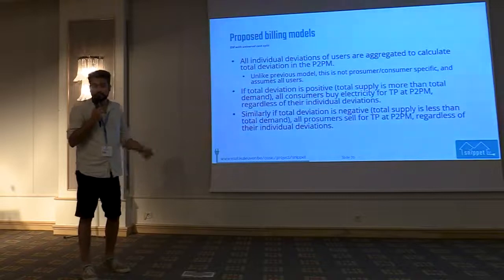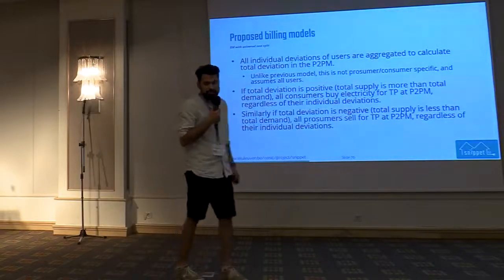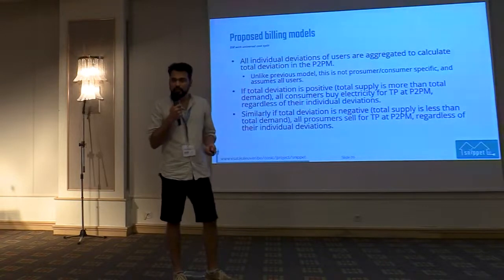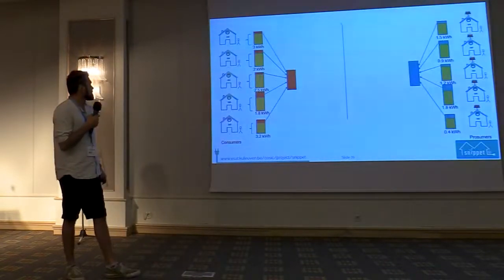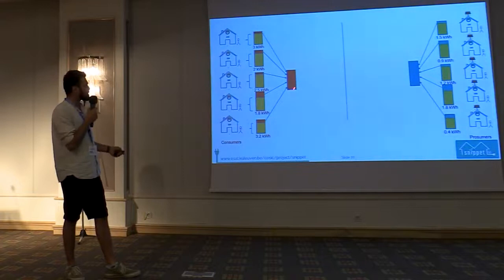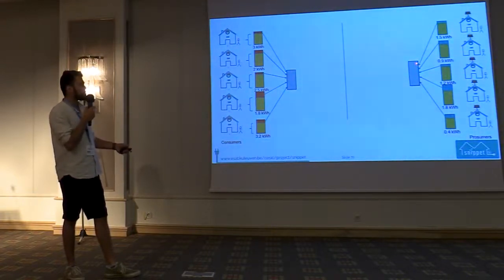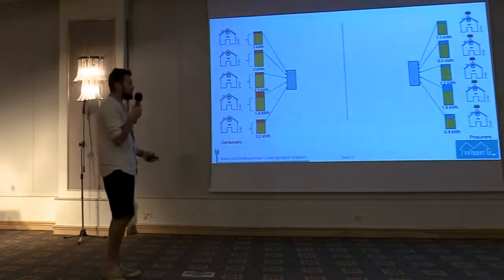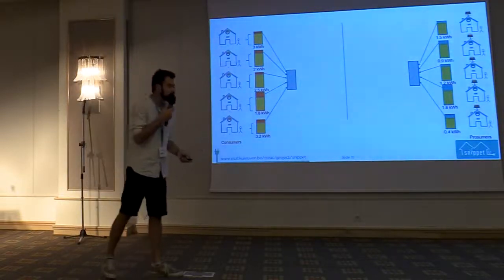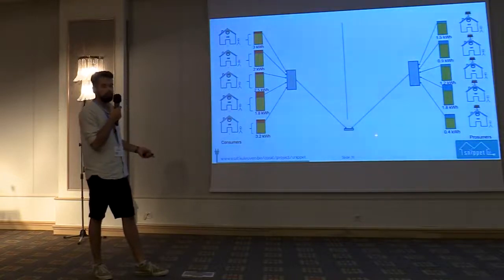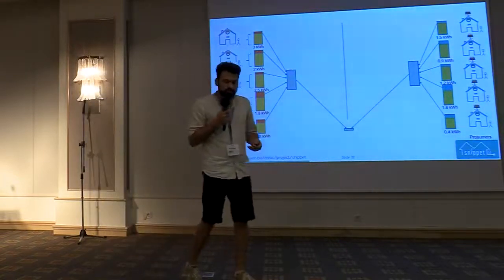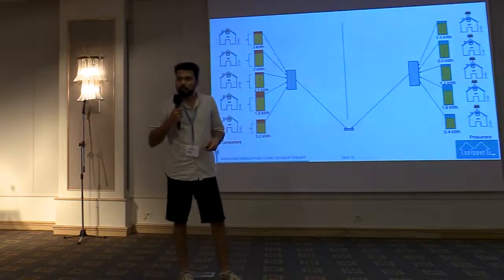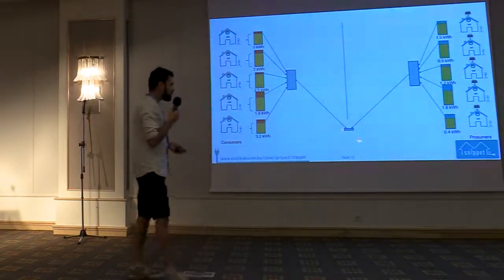If there is a presumer who is over-delivering, they can sell that electricity at trading price instead of feed-in tariff. Adding all deviations together, if the presumer deviations are a little more than consumer deviations, the total deviation is positive. As you progress through these billing models, the total deviation that needs to be compensated by the retail market has been reduced to a tiny amount.